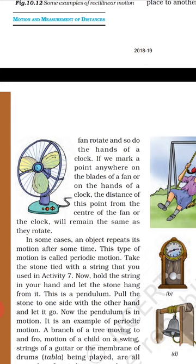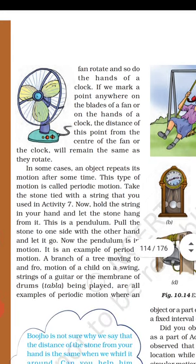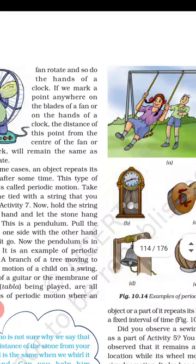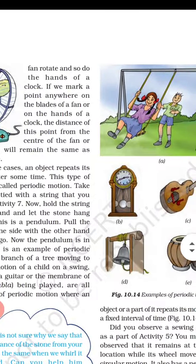Now in some cases, an object repeats its motion after some time — like a simple pendulum. This is called periodic motion.